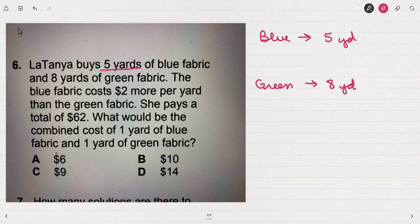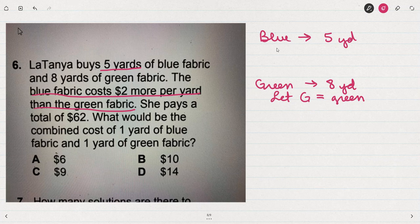I also know that the blue costs two more dollars per yard than the green fabric. That's an important piece to note because when I write variables, I'm going to have to start with the green in order to get the blue price.